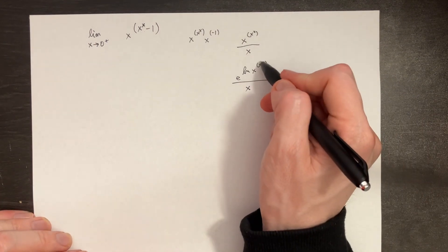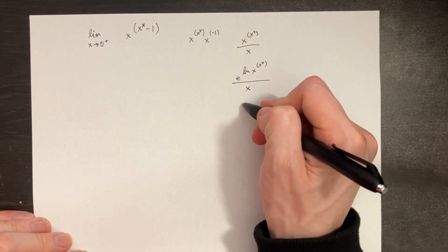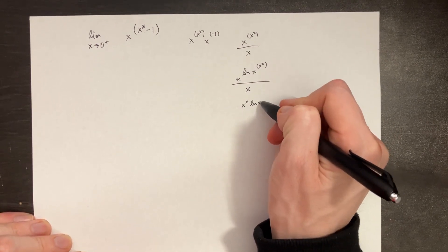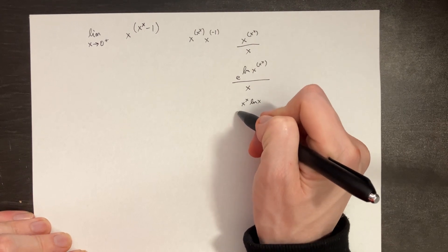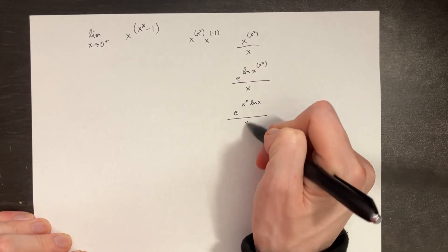From here, we'll just take this stuff and put it in front. So we have something like x to the x, and then we have ln of x, and this is still to the power of e over here divided by x.